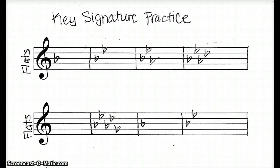Hi guys! Now we've learned all four of the rules for finding the key when you're looking at the key signature. We've talked about rule 1, which was no sharps and flats equals the key of C. Rule 2, which is 1 flat equals the key of F. Rule 3 for flats, where the second to last flat equals the key. And rule 4 about sharps — you find the last sharp and go up one letter in the alphabet.